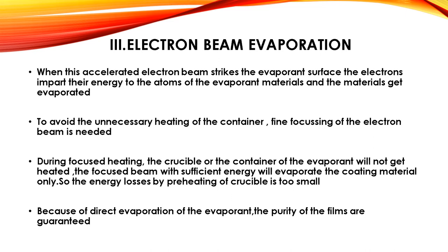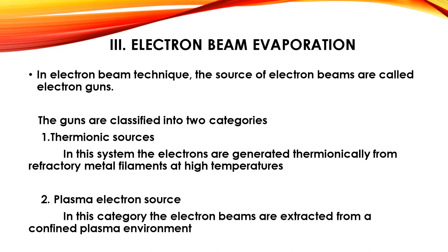During focused heating, the crucible or container of the evaporant does not get heated. The focused beam with sufficient energy evaporates only the coating material, so energy losses from preheating the crucible are minimal. Because of direct evaporation, the purity of films is guaranteed. In the electron beam technique, the sources of electron beams are called electron guns, classified into two categories: thermionic sources and plasma electron sources.